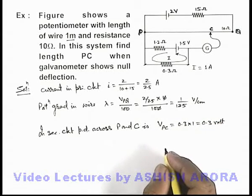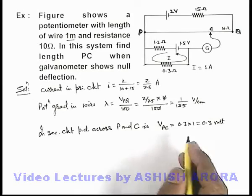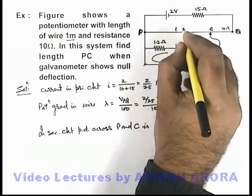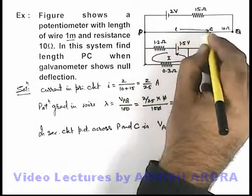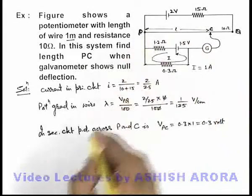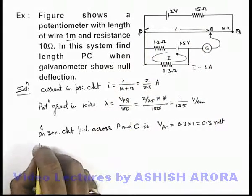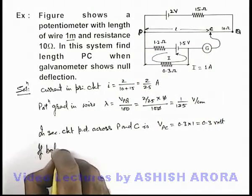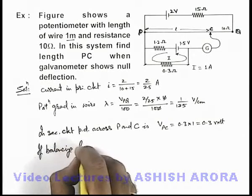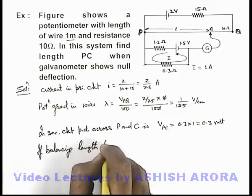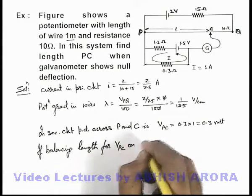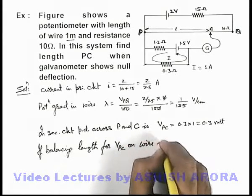Now if this is the potential difference across P and C, we can say if a balancing length for this potential difference is l, so we can write if balancing length for Vpc on wire is l.